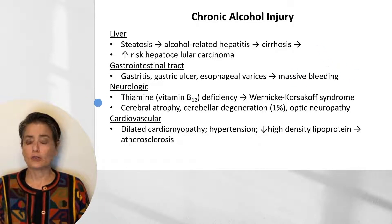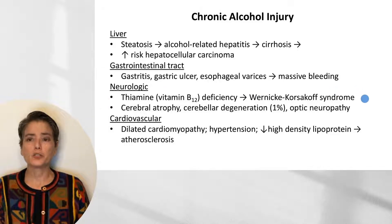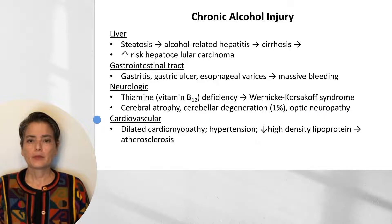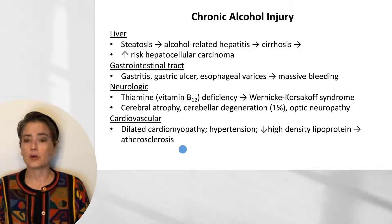Chronic alcohol use is associated with deficiency in multiple vitamins, particularly thiamine (also known as vitamin B1), leading to Wernicke-Korsakoff syndrome. Neurologic effects also include cerebral atrophy, and in about 1% of patients, cerebellar degeneration and optic neuropathy. The cardiovascular system can be affected by dilated cardiomyopathy and hypertension, and injury to the liver can cause decreased high-density lipoproteins, leading to atherosclerosis most significantly of the coronary vessels.